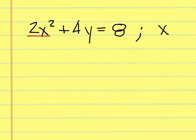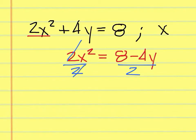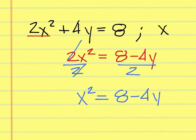We want this x by itself, so we leave 2x squared where it's at on the left, but we have to move the 4y over to the right and change the sign. The next thing we have to undo after we've undone all of the addition and subtraction is to undo multiplication and division. So we have to divide by 2 to get rid of it, which leaves me with x squared equals 8 minus 4y over 2.